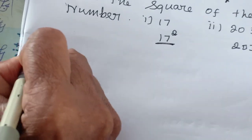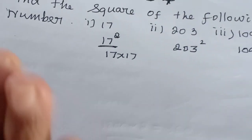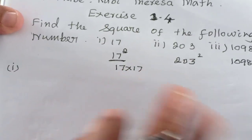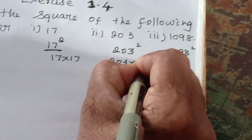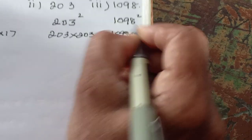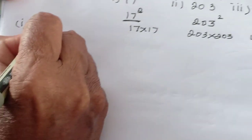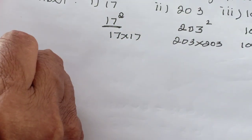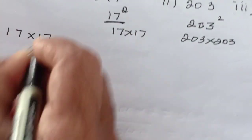First one. Usual multiplication you know, isn't it? So just I am teaching alternate methods. Usual multiplication 17 into 17, this is 203 into 203, this is 1098 into 1098. So usual multiplication you know, so you can do it. For better understanding, for the late bloomers purpose, just I am doing this.